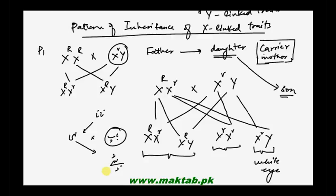So X-linked traits mostly travel from maternal father (nana) to grandson in a zig-zag manner. The father in between remains intact — the trait skips a generation. It travels: nana → mother (as carrier) → son, and this zig-zag pattern continues through generations.